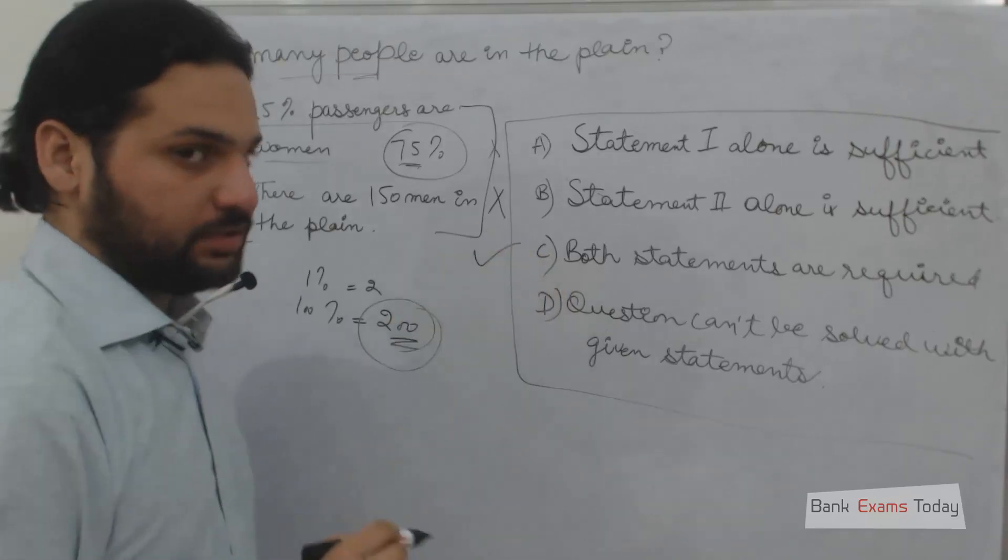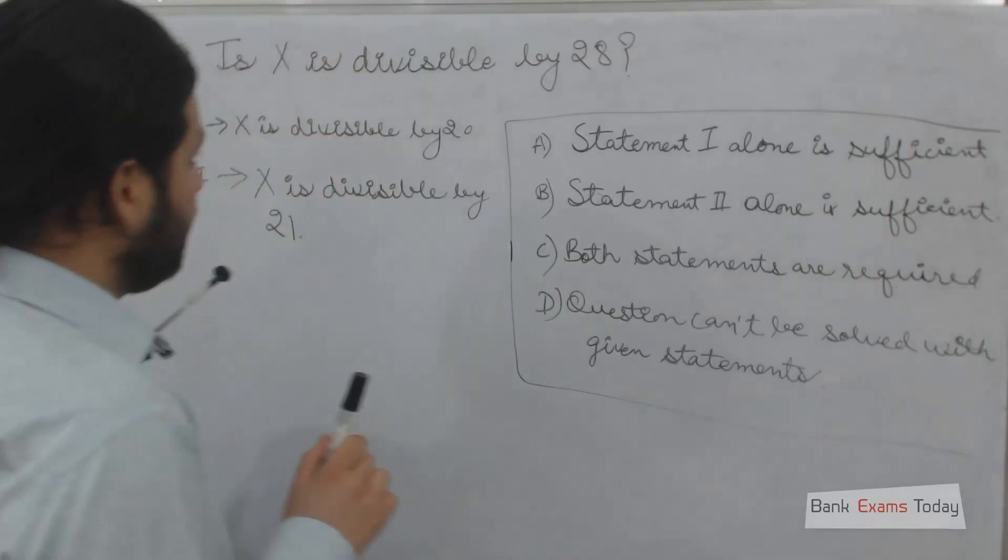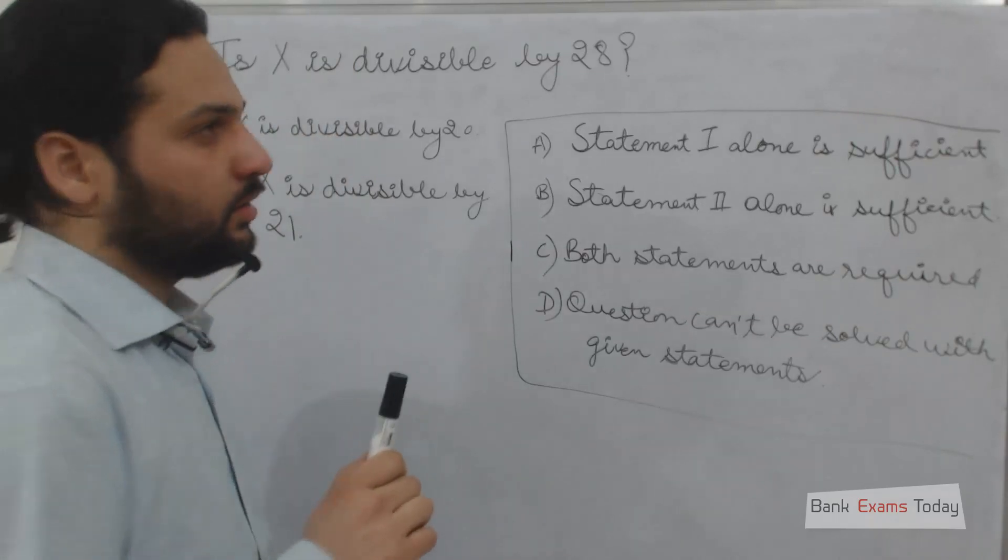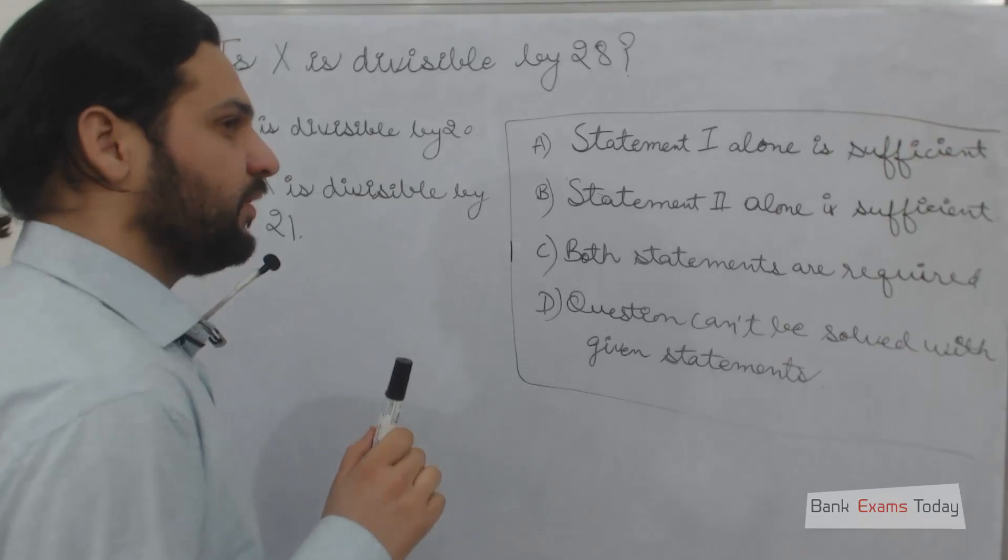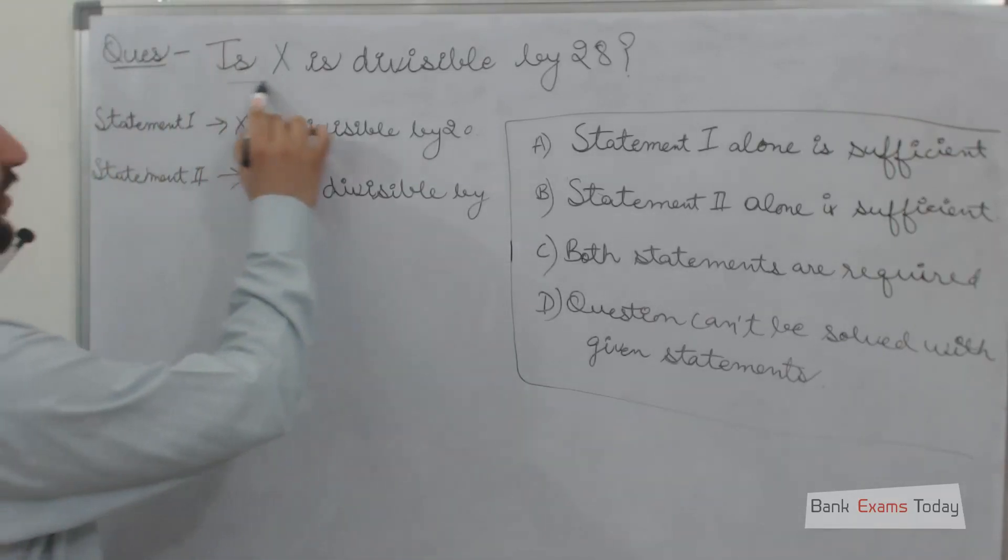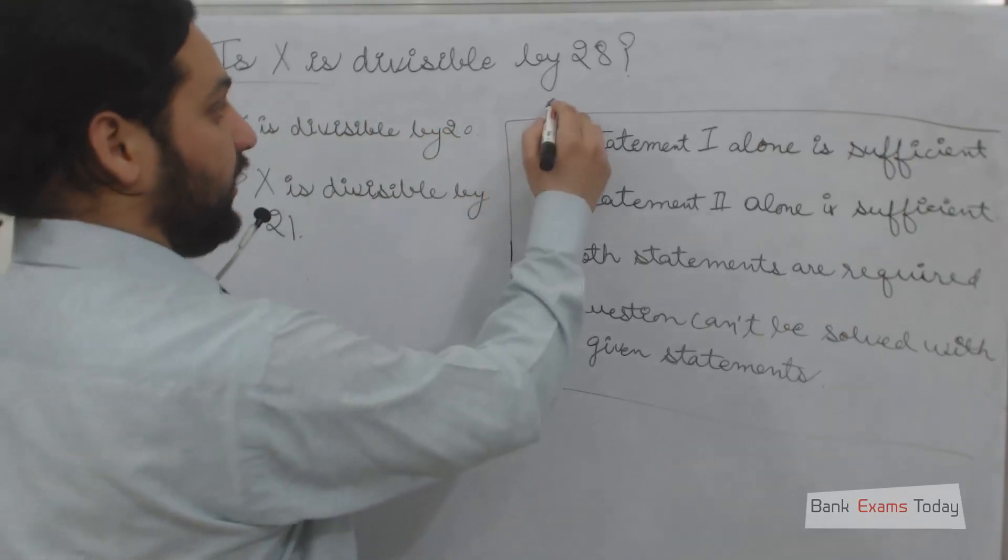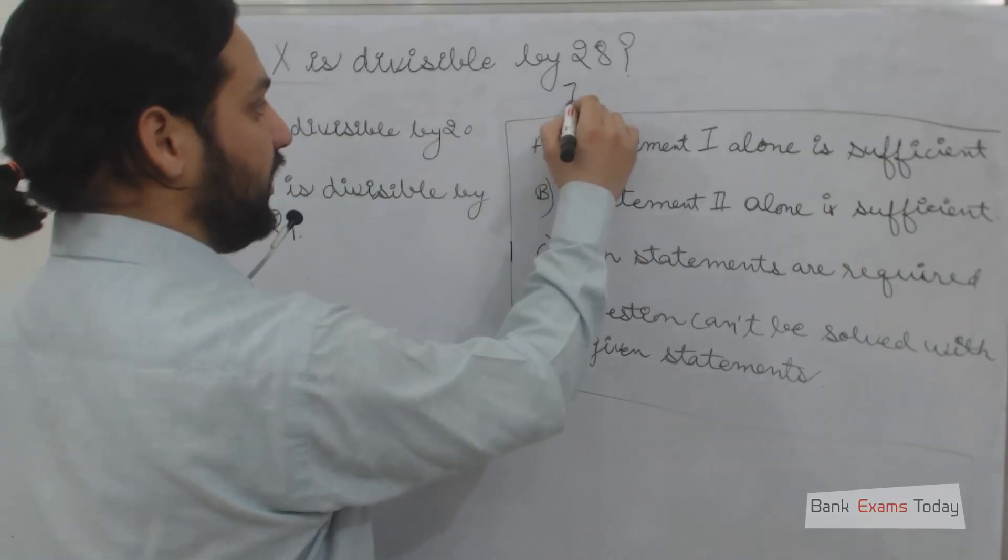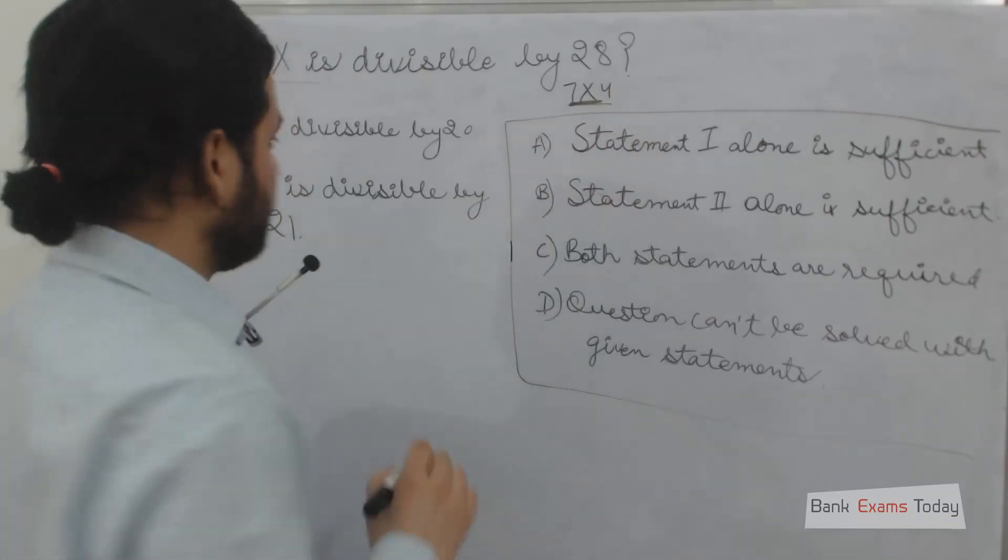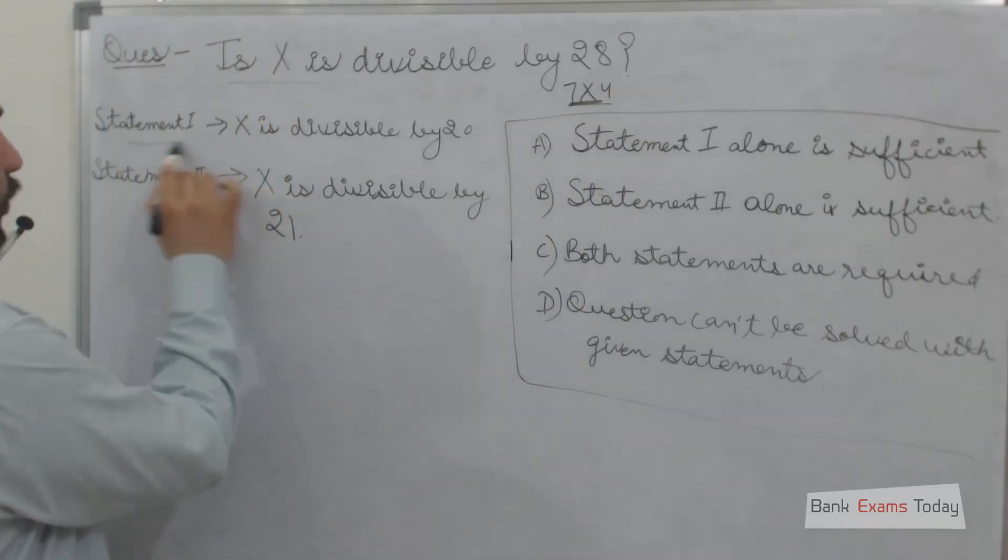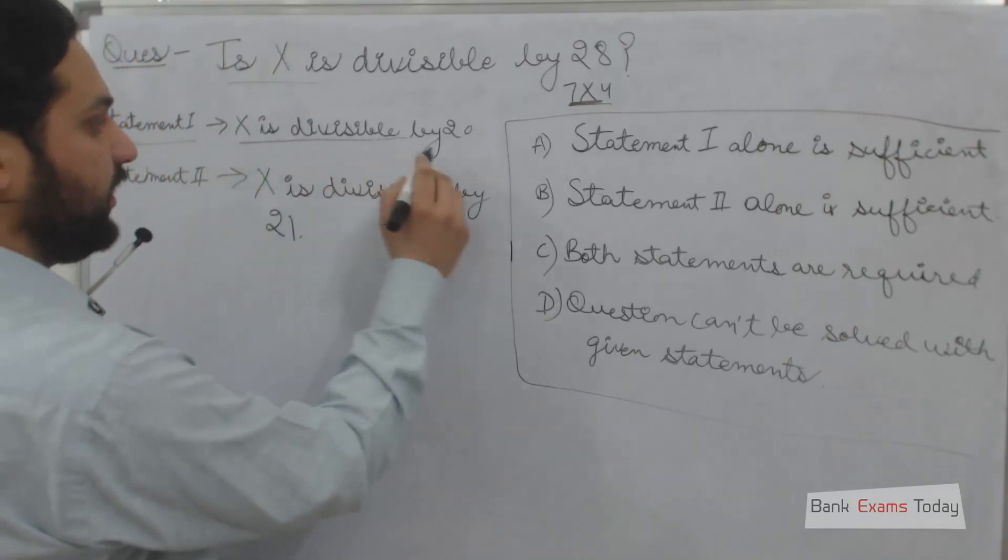Let's take another important question seen in SBI 2012 and IBPS 2012. Is X divisible by 28? That means is X divisible by 7 multiplied by 4? Statement 1: Is X divisible by 20? That means X is divisible by 5 times 2 times 2. We need to check the LCM.